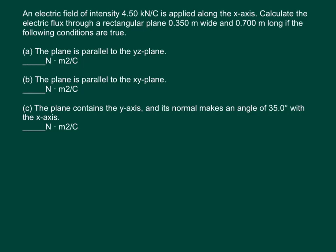This question says an electric field of intensity 4.5 kilonewtons per coulomb is applied along the x-axis. Calculate the electric flux through a rectangular plane 0.35 meters wide and 0.7 meters long if the following conditions are true.